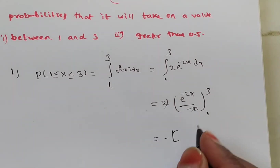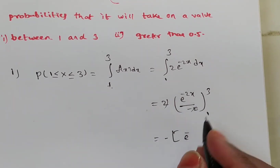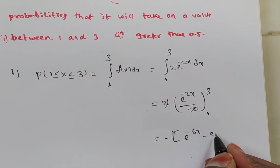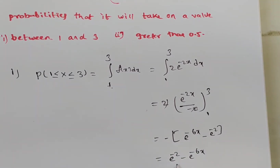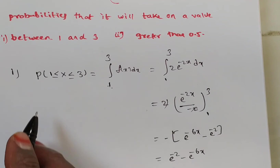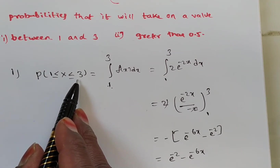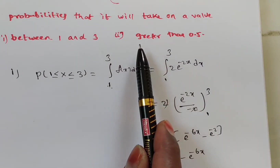Applying the upper limit minus lower limit, we get: minus [e^(-6) minus e^(-2)], which simplifies to e^(-2) minus e^(-6). So the probability P(1 ≤ X ≤ 3) equals e to the power of minus 2 minus e to the power of minus 6.